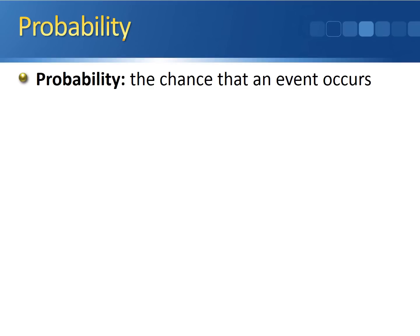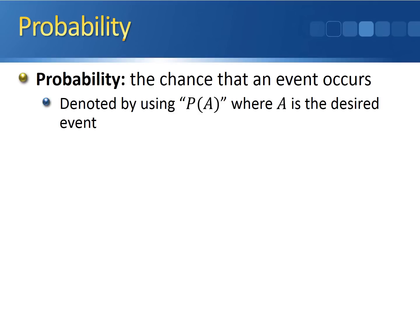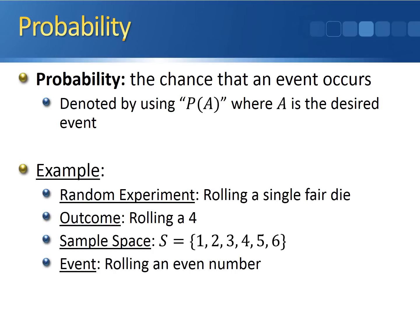Now that we've defined all of these other terms, we can finally define what a probability is. The probability is the chance that an event occurs. Probabilities are denoted by using the capital letter P, followed by a set of parentheses, with the event that we desire inside. So if A is the event that we've defined, P of A is the probability that event A will occur. For our example of rolling a fair die, where we've defined our event as rolling an even number, we can write P(even) to indicate we're looking for the probability of rolling an even number on a single roll of a fair die.